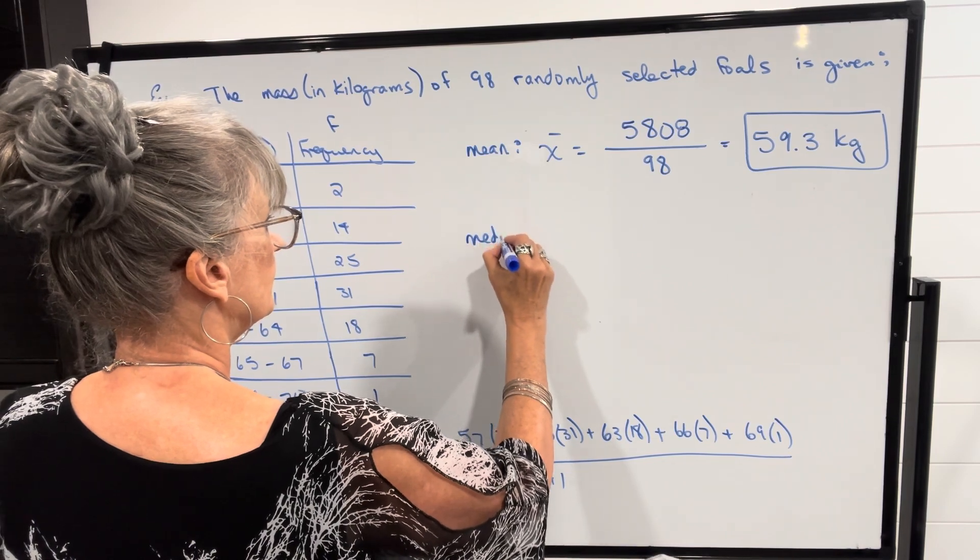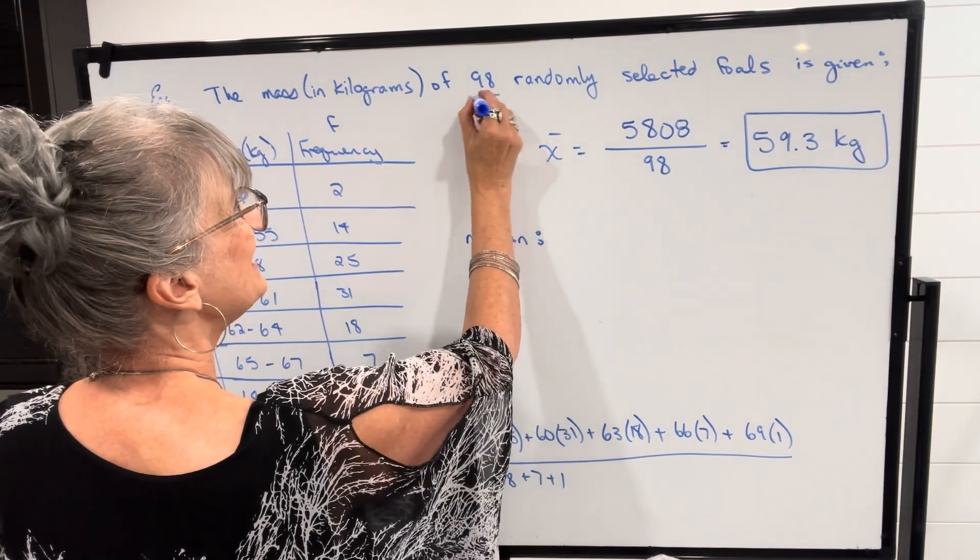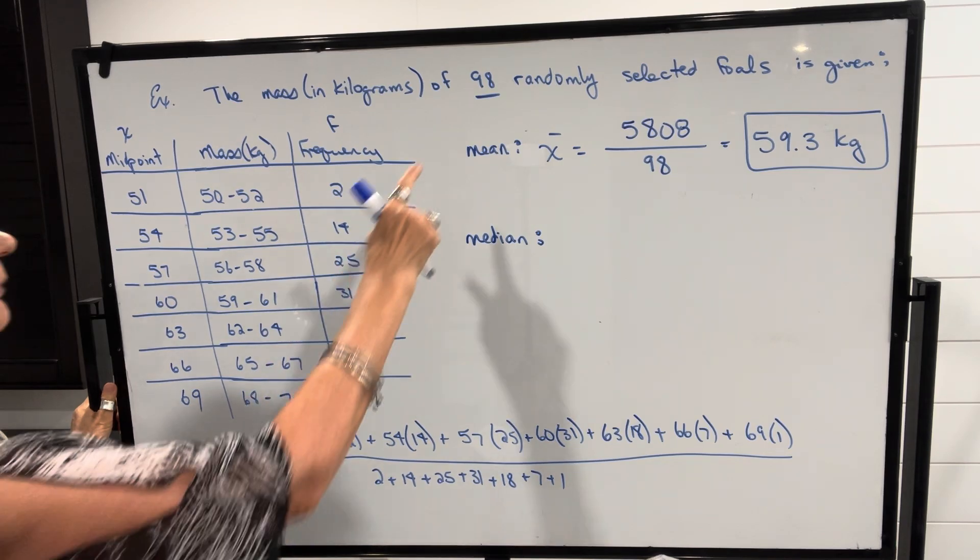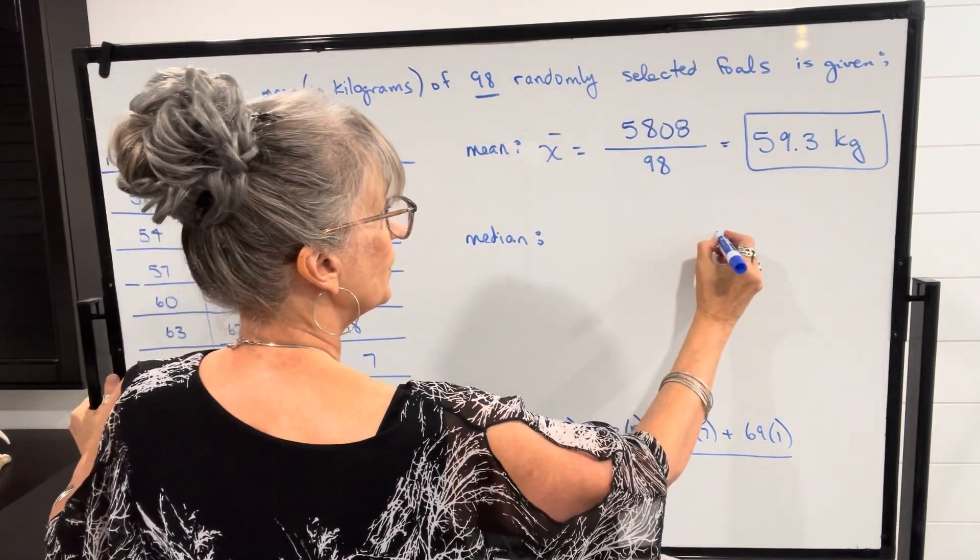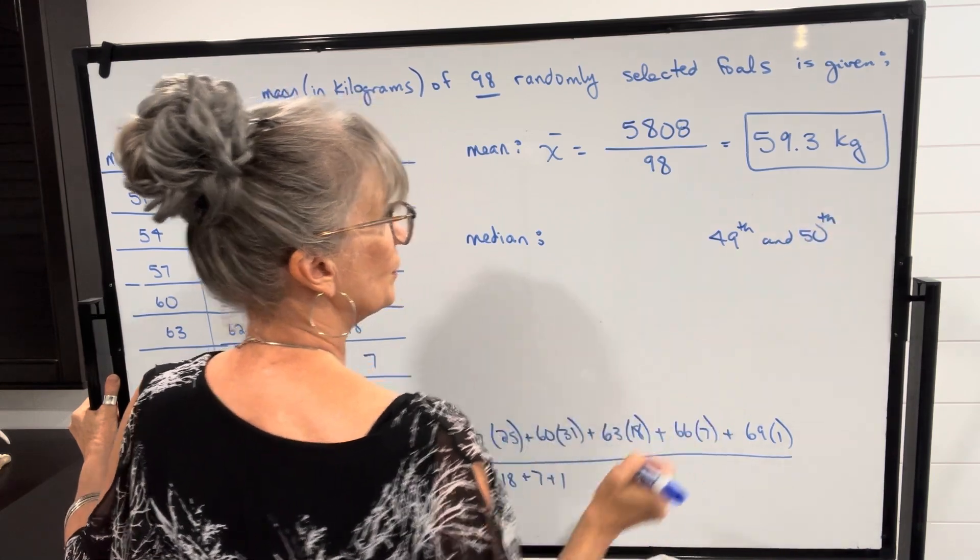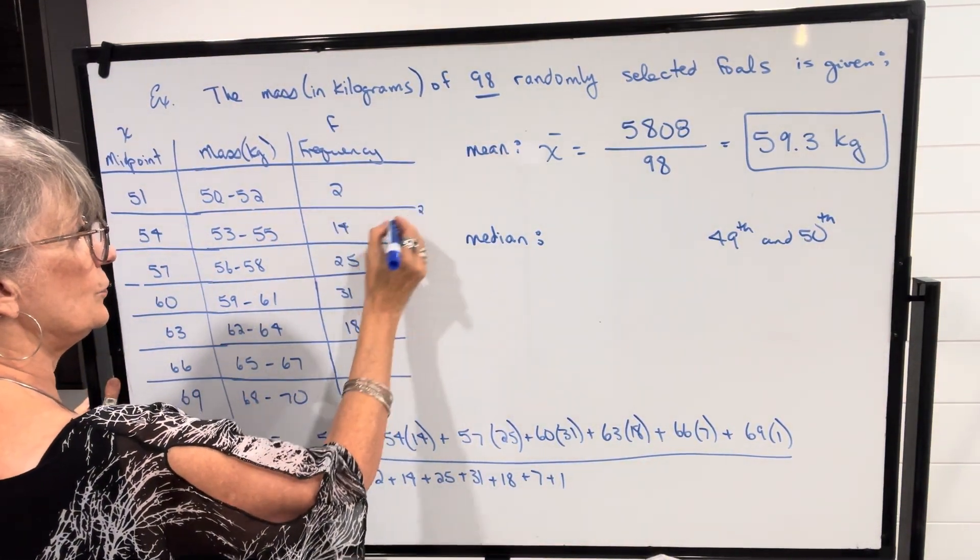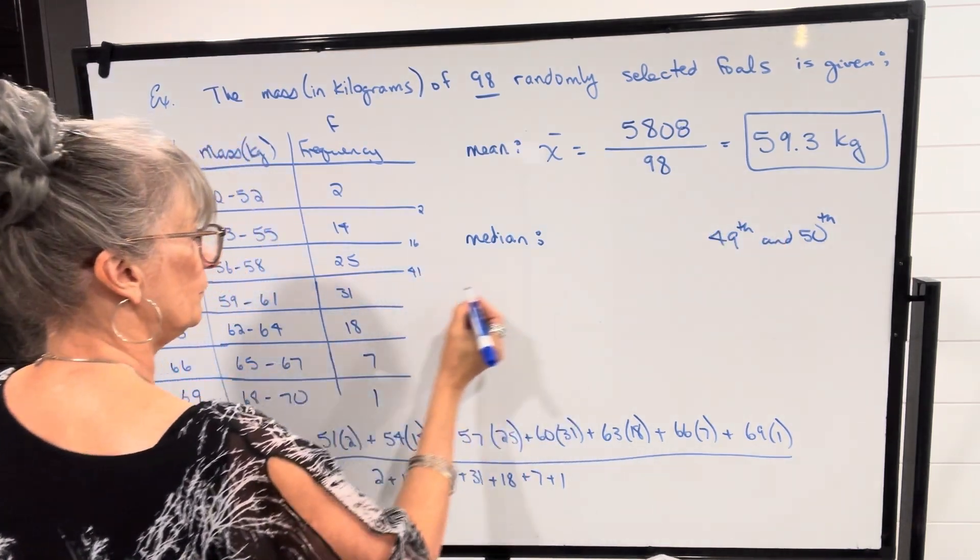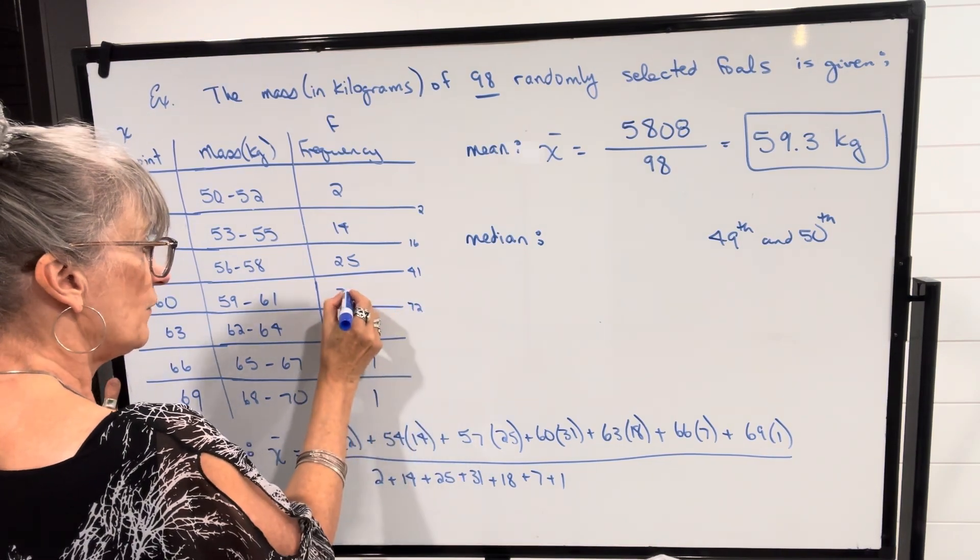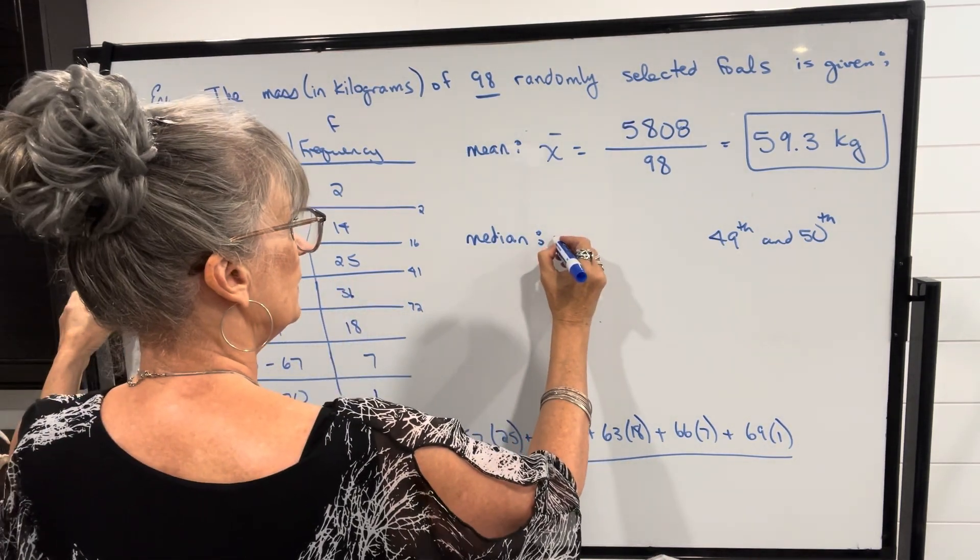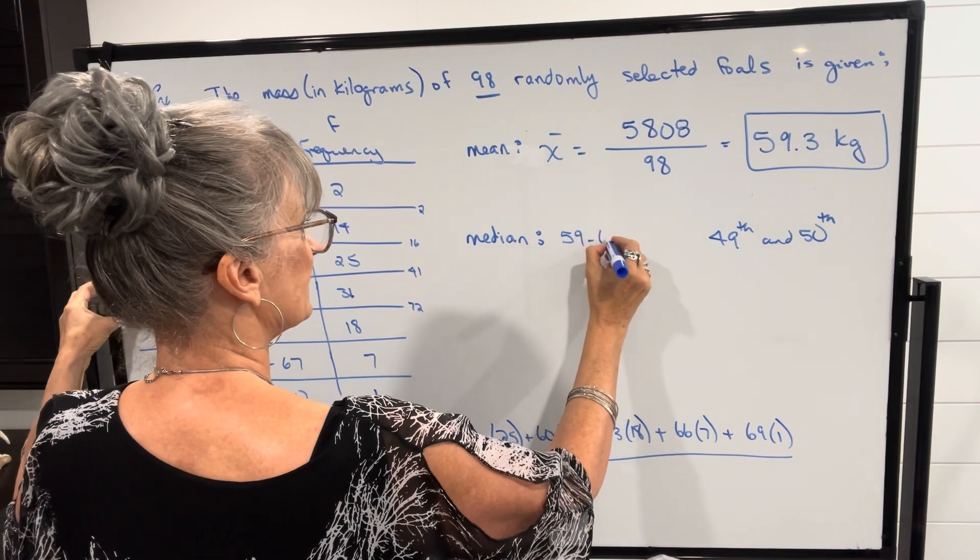To find the median, there's 98 numbers or 98 foals. So we want to find the mass of the one in the middle. If we were to arrange it in order, well, we have an even number. So we're looking for the middle between the 49th and the 50th foal. So I start here, there's two total here, 16 here, 41 here. I'm looking for the 49th and 50th. So this would be 72. So my 49th and 50th would be in this range. So the median would be 59 to 61 kilograms.